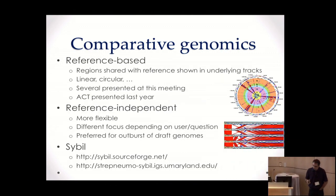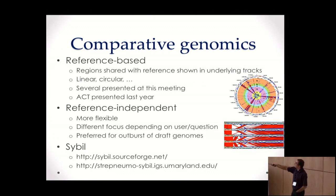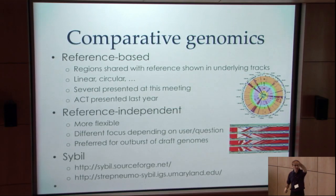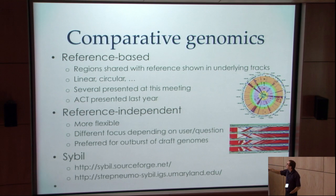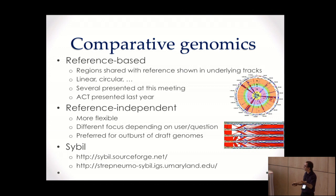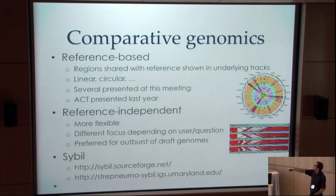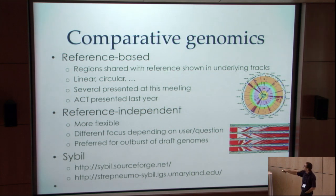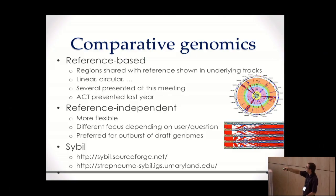If we think comparative genomics — you've heard a good bit about it over the talks at this meeting — I partitioned them into two types. One type is reference-based: you have your reference genome, say a chromosome from a human or a given individual. Everything I'm going to talk about is applicable to any type of organism, whether eukaryotic, prokaryotic, or viral. You have your reference genome, and you can show the regions from that reference that are shared with the other genomes you're studying, displayed in tracks in your favorite genome browser. You can go linear or circular.